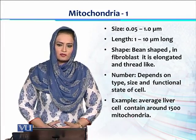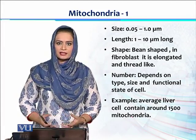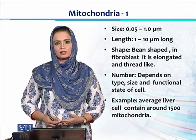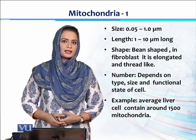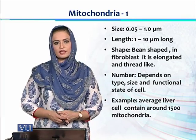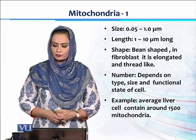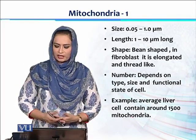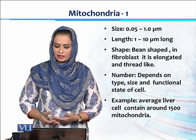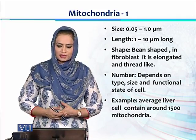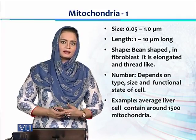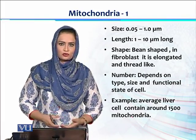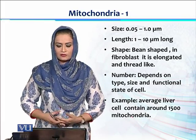The morphology of mitochondria: the size is very small, ranging from 0.05 to 1 micrometer. The length is from 1 to 10 micrometers. Mostly mitochondria are oval shaped or bean shaped, and they can also have a fibroblast-like elongated, thread-like structure. Both oval, bean-shaped, and thread-like mitochondria have been observed in different cells.